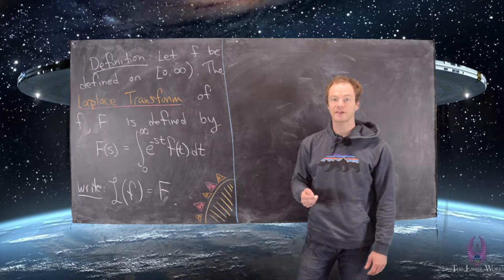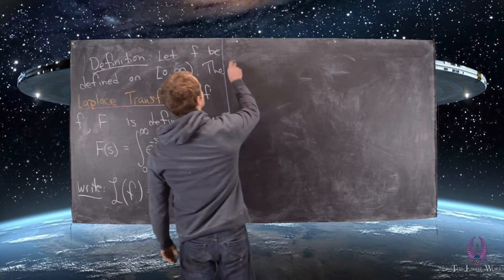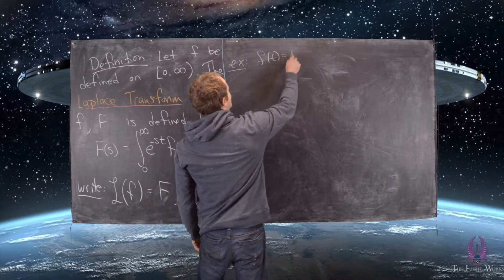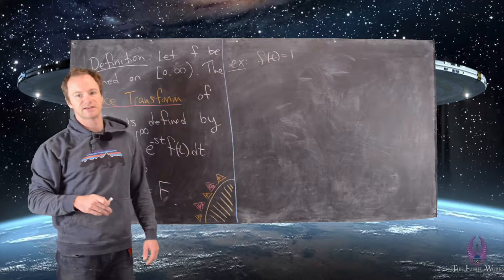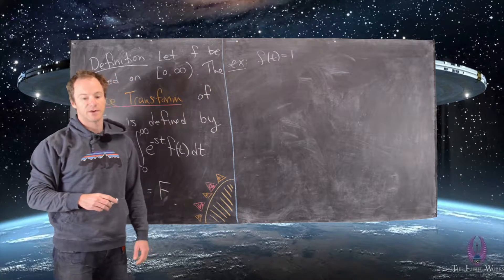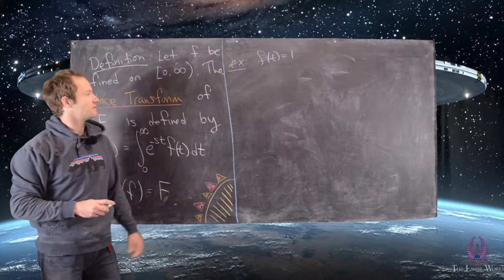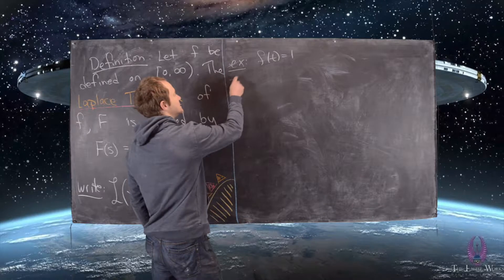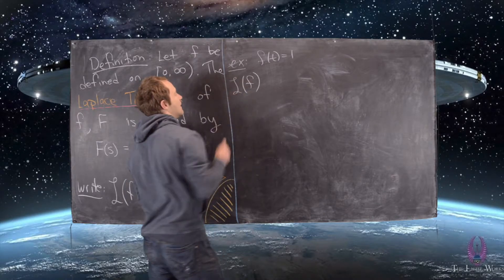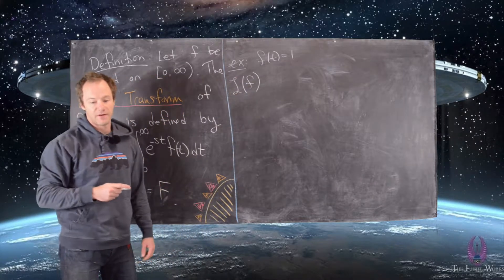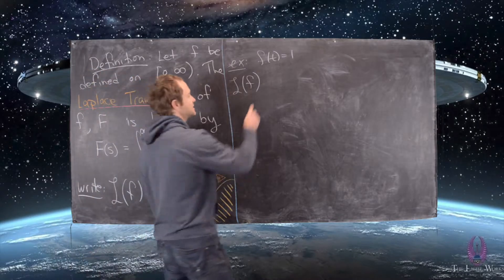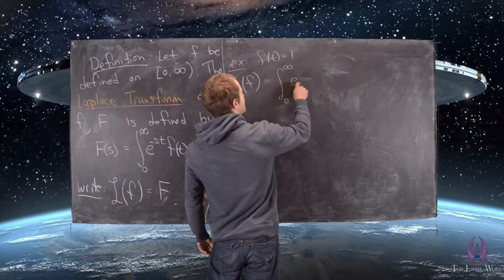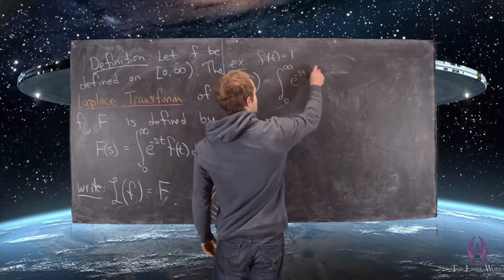Let's look at some really simple examples. Probably the simplest would be f of t equals the constant function one, and that's the one we'll start with. If f of t is the constant function one, then L of f, or capital F, is defined as the integral from zero to infinity of e to the minus st dt.